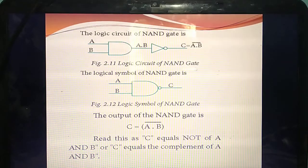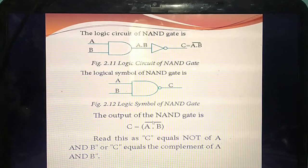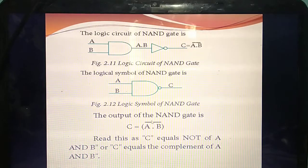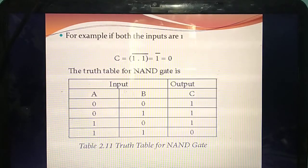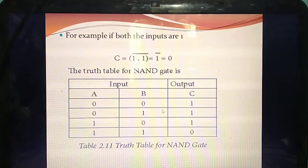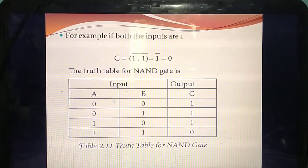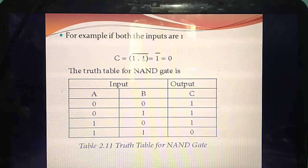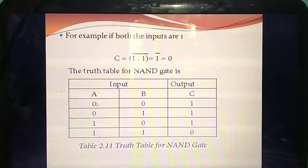What is the output you will get? C equal to A dot B bar. How do you read this? C equal to NOT of A AND B, or complement of A AND B. Truth table: both inputs 1 — 1 into 1 = 1, then 1 bar = 0. Remaining all combinations give answer 1. So if you have studied AND gate, OR gate, and NOT gate thoroughly, you can easily write NAND gate, NOR gate, and bubbled AND gate.